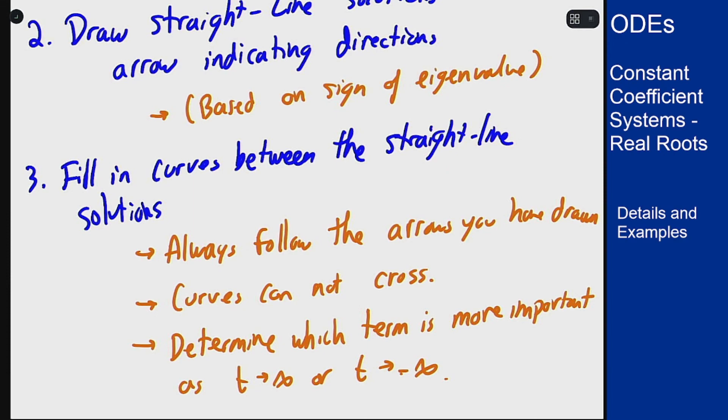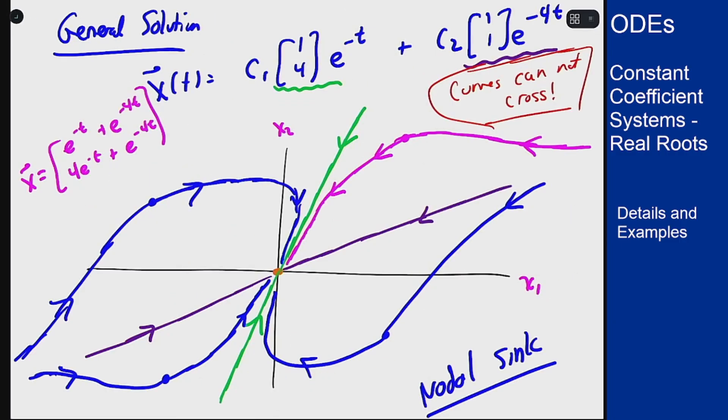This gives you the way to set up and draw these different pictures for these phase portraits for these equations. You get an idea of what's going to happen in the solution over time and how it's going to behave. If you follow those steps you'll get something like what we drew for the previous example. We drew in our straight line solutions, our green and purple straight lines, and the arrows indicating directions they both went in.